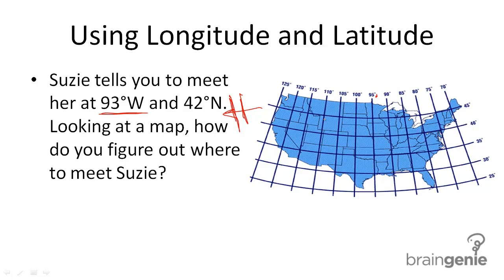Next we need 42 north. North means that it's north of the equator, but it's going to be a line that runs east to west. So let's find 42 north — that's going to be about here. Now we find where these two lines intersect, and this is where Susie wants you to meet her.